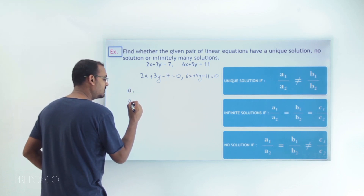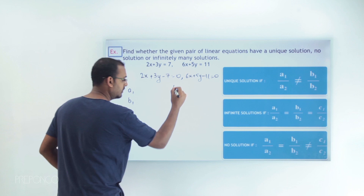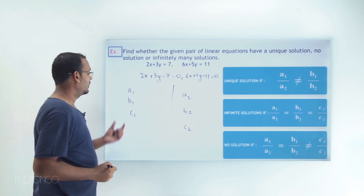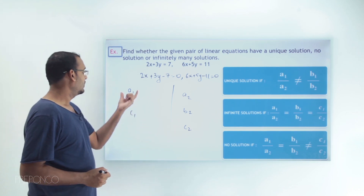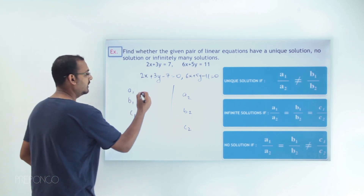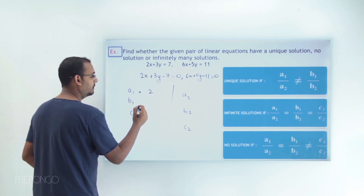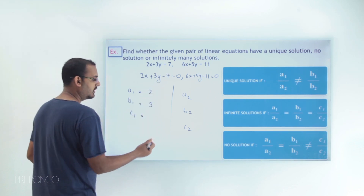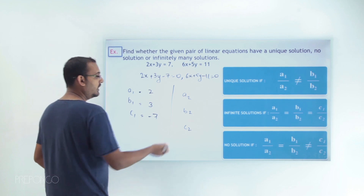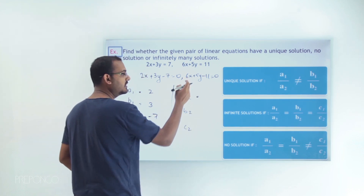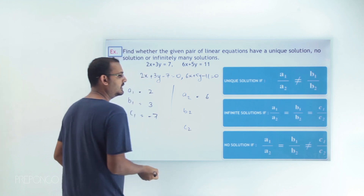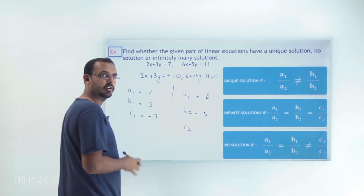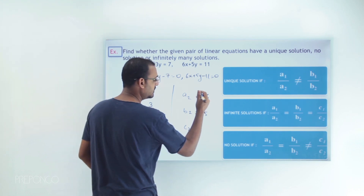So now I can figure out the coefficients. For the first equation: a1 is the coefficient of x, which is 2; b1 is the coefficient of y, which is 3; and c1 is the constant term, which is −7. For the second equation: a2 is the coefficient of x, which is 6; b2 is the coefficient of y, which is 5; and c2 is the constant term, which is −11.